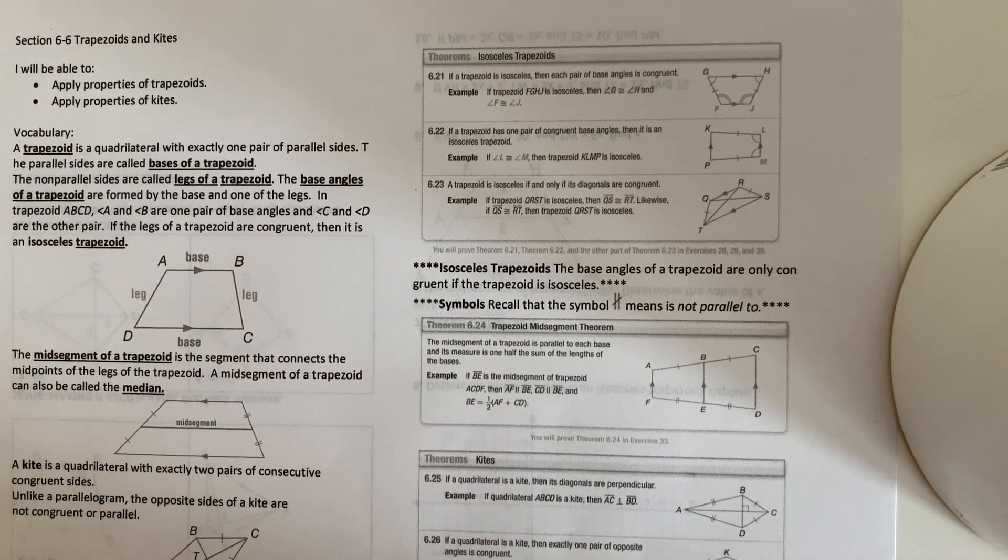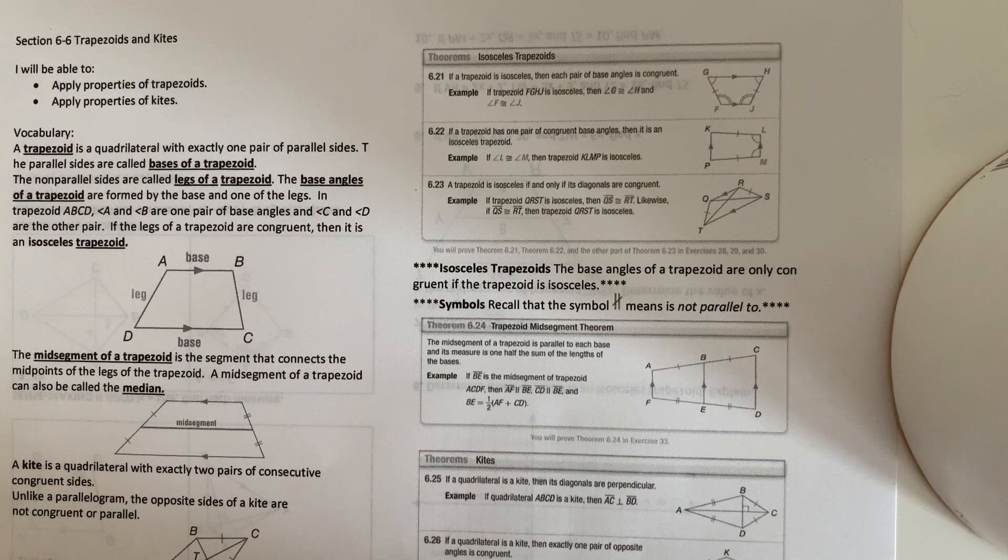The base angles of a trapezoid are formed by the base and one of the legs. In trapezoid ABCD, angle A and angle B are one pair of the base angles, and angle C and angle D are the other pair.